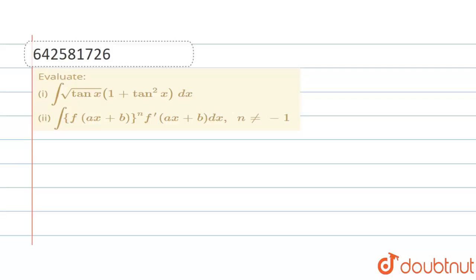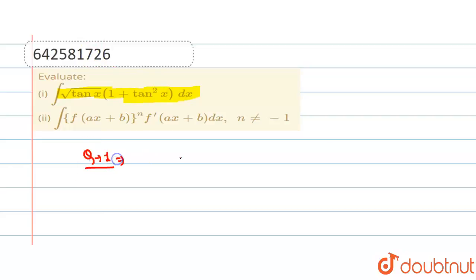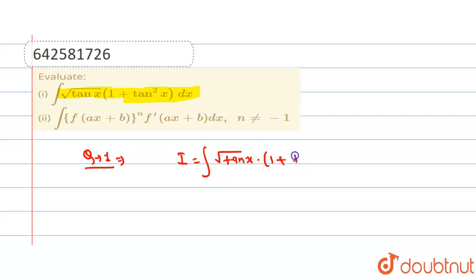Hello everyone, welcome to Doubtnut. Now the question is: integration of √(tan x) into (1 + tan²x) dx. Let us consider question number one: I = ∫ √(tan x) · (1 + tan²x) dx.